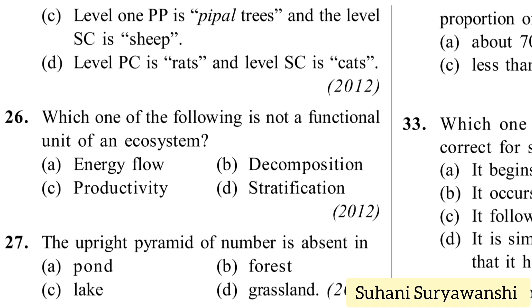Which one of the following is not a functional unit of ecosystem? It will be stratification, because energy flow, productivity, decomposition, and nutrient cycling are the functional units of ecosystem. Stratification is not. Answer is option D.